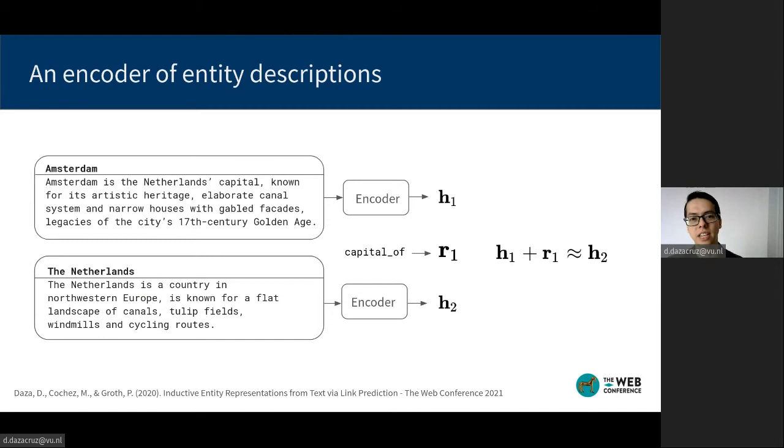This is done for each pair of entities that occur in a triple. And then we proceed as before by applying a relational model such as the translational model on top of the entity embeddings produced by the encoder and a particular relation embedding.